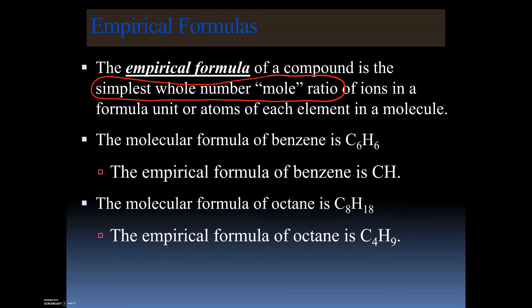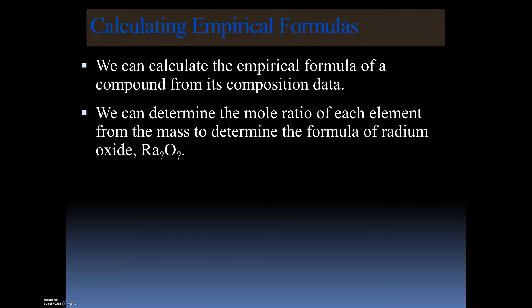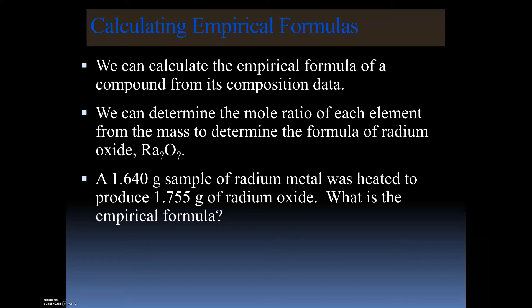We can calculate the empirical formula using composition data in two different ways: data collected from an experiment, or percent composition. In this particular example, we're going to figure out the empirical formula for radium and oxygen. We have a 1.640 gram sample of radium that was heated to produce 1.755 grams of radium oxide. What is the empirical formula?